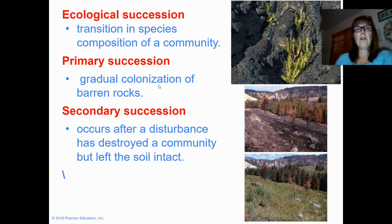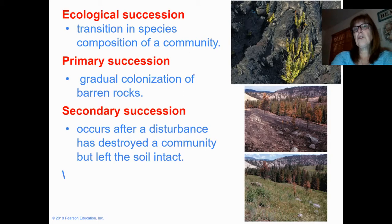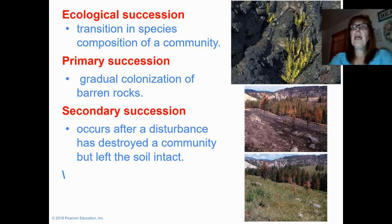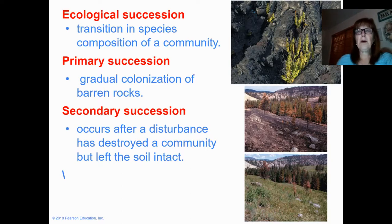Primary succession is different — it occurs on barren rocks or where soil has been totally destroyed and nothing lived there before. For example, a volcanic island being formed from hot magma cooled by the ocean has no living organisms. Plants only grow there because animals bring in seeds, magma breaks down, or loose soil blows in, giving seeds a chance to take root. Another example is a glacier that melts, exposing soil where plants then begin to grow.